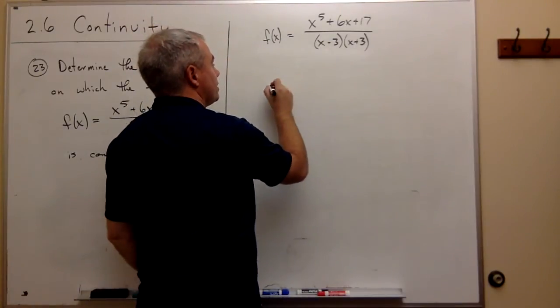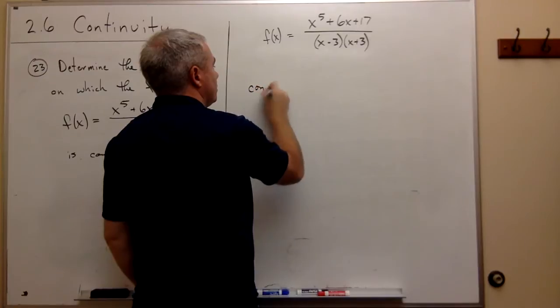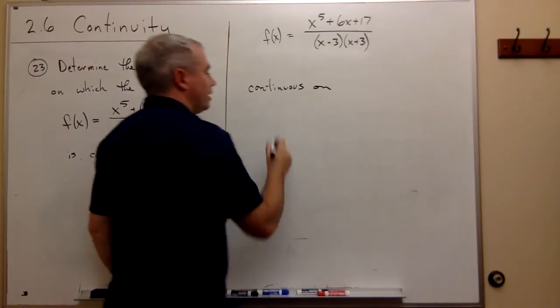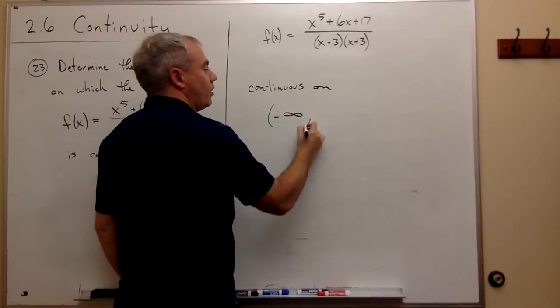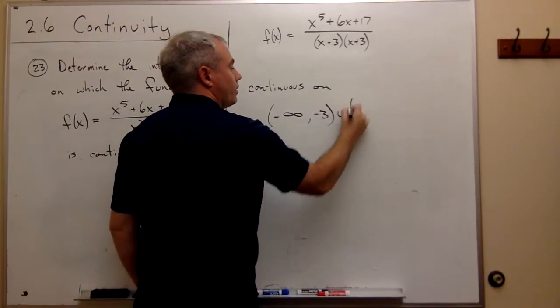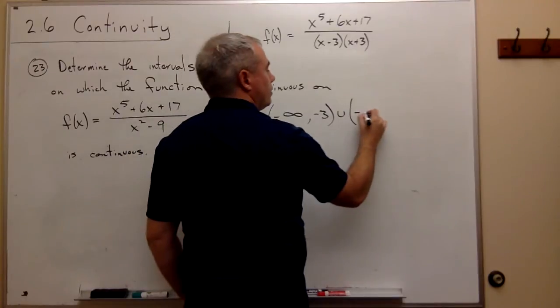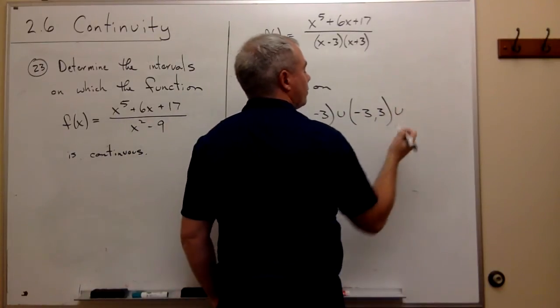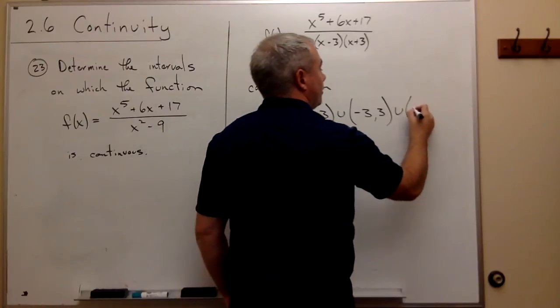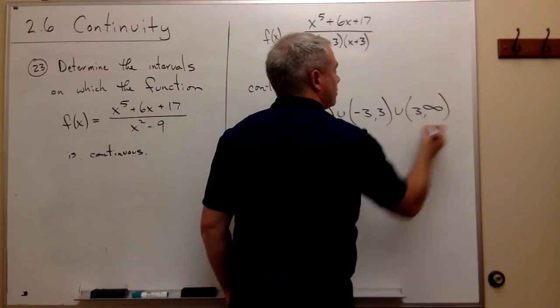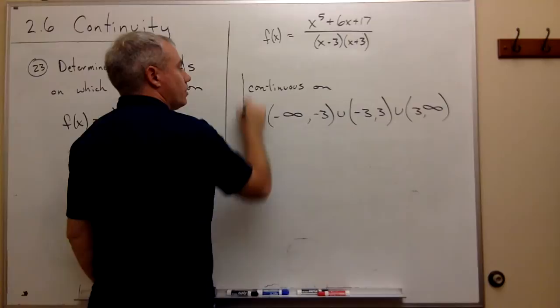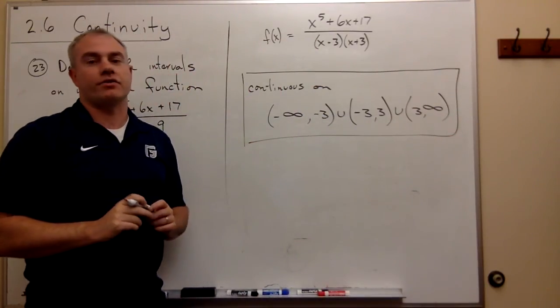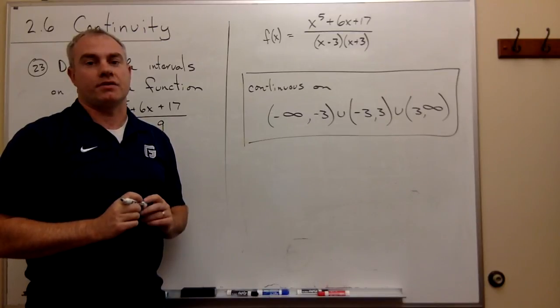So that means that this thing is continuous on the interval from minus infinity all the way to minus 3, together with the interval from minus 3 to 3, together with, or union if you like, 3 to infinity. So these are the intervals on which this function is continuous. Thank you.